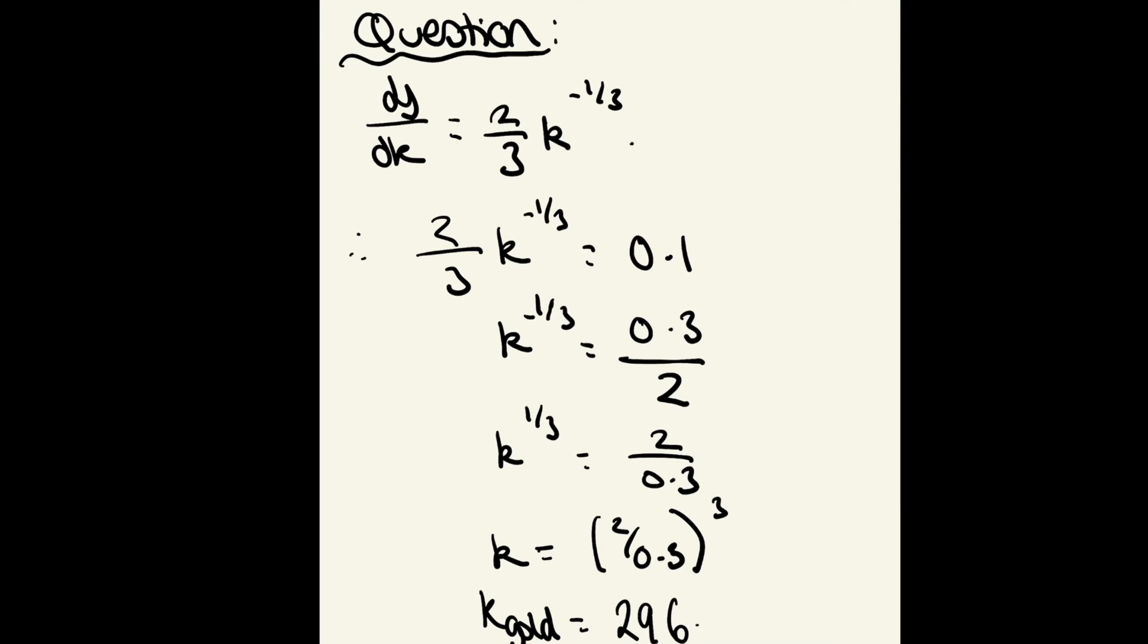Chuck that into a calculator and you get 296.3. That is k gold. If you haven't watched my last video, k star—the steady-state capital level for this question—came out as 64. That means our golden rule level of capital is higher than the current steady-state level, so the savings rate needs to increase to achieve k gold.